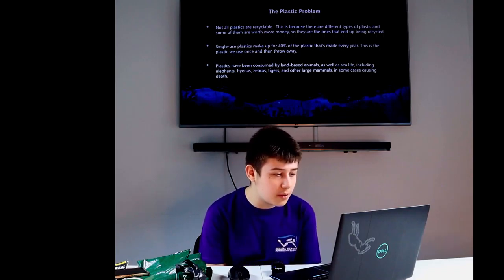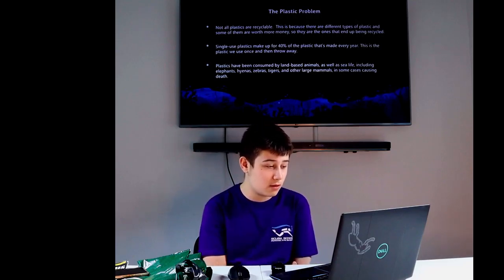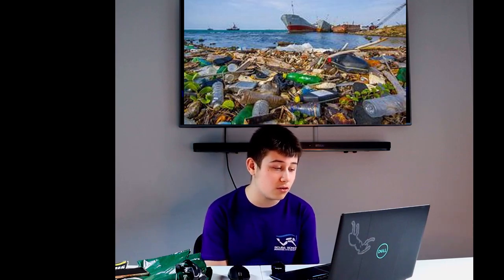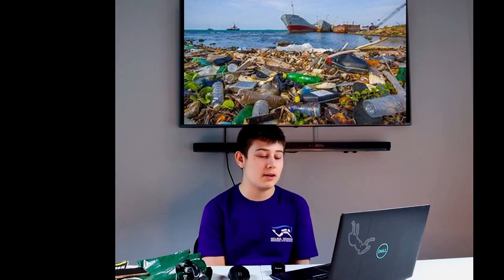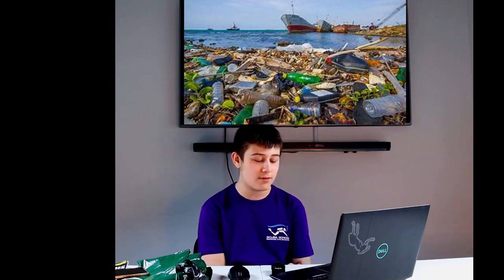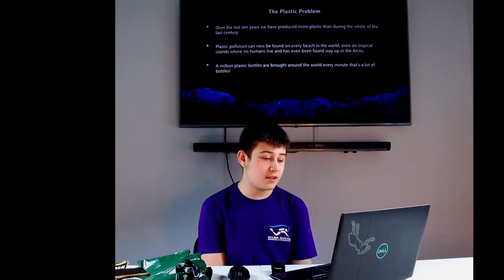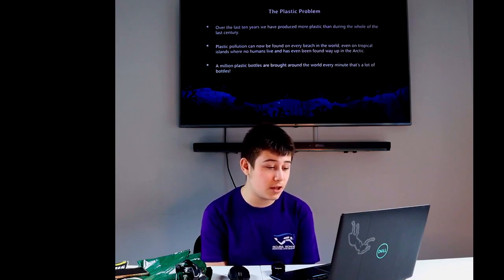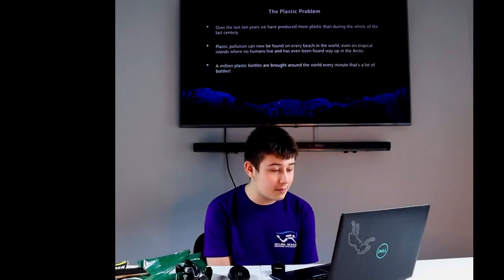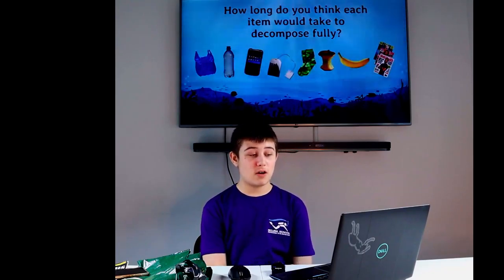Not all plastics are recyclable. This is because there are different types of plastics. And some of them are worth more money so they get recycled because they are more expensive to produce. Single use plastics make up 40% of the plastics made every year. This plastic is only used once and then thrown away. Plastics have been consumed by land-based animals as well as sea life including elephants, hyenas, zebras, tigers and other large mammals in some cases causing death. Over the last 10 years we have produced more plastic than we did in the whole last century. Plastic pollution can be found everywhere on every beach in the world, even tropical islands where no humans are currently living or inhabiting, and has even been found up in Antarctic. A million plastic bottles are bought around the world every minute. That's a lot of plastic bottles. How long do you think it will take for each item to fully decompose?